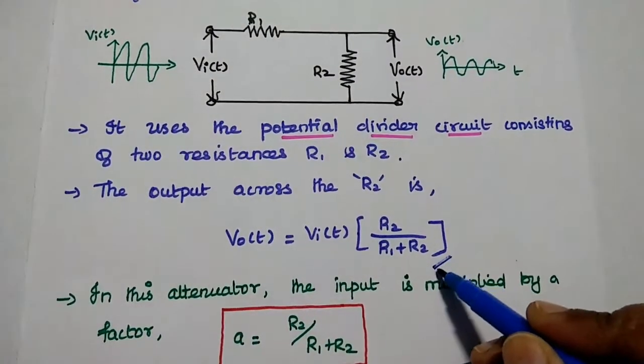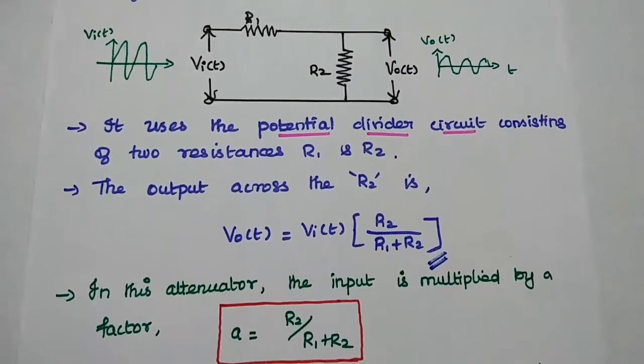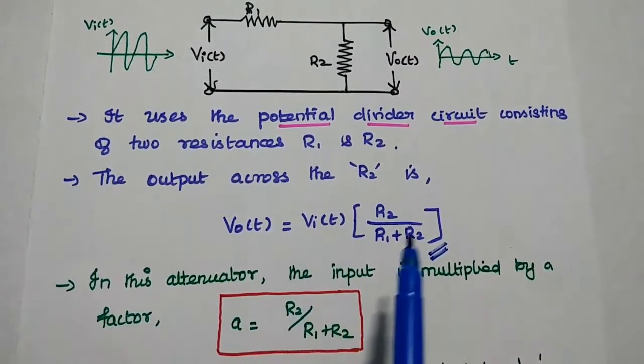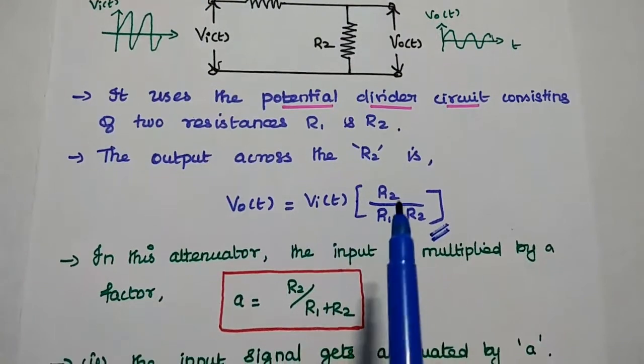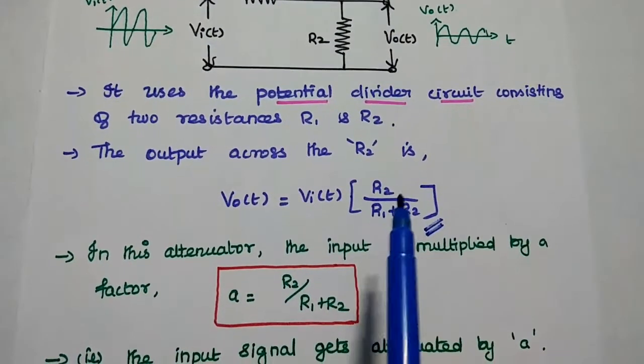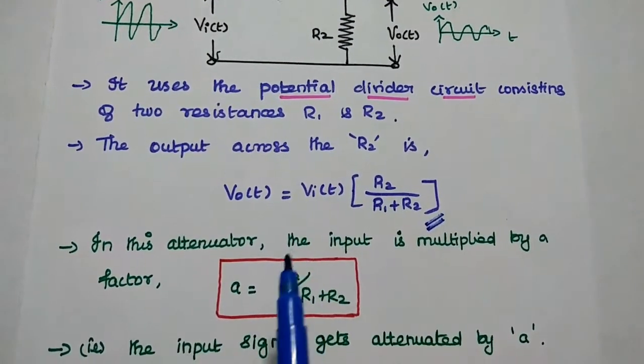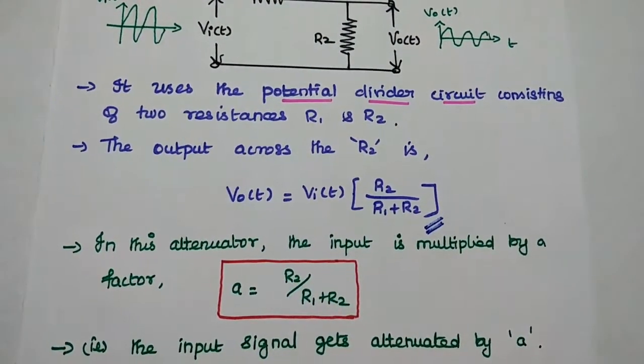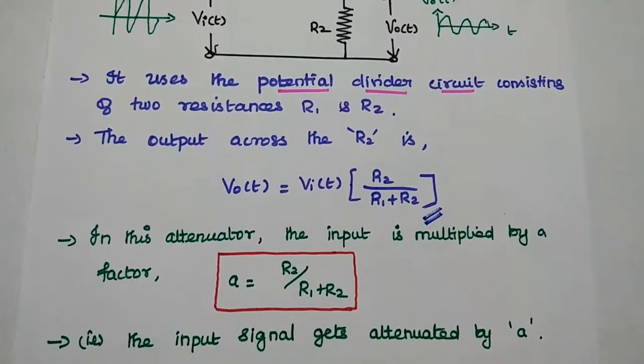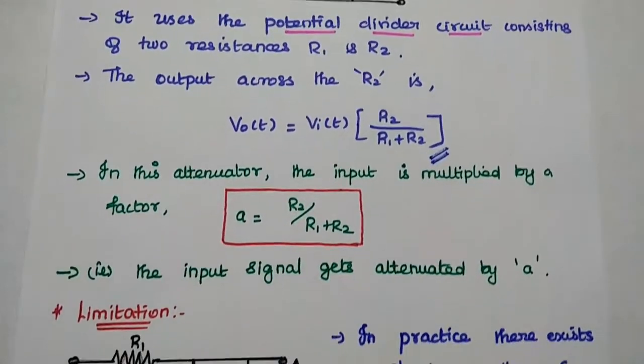This is known as voltage divider concept. Here the input is multiplied by a factor R2 by R1 plus R2. Then the amplitude of this input signal is reduced. The attenuator circuit uses the voltage divider circuit to reduce the amplitude.